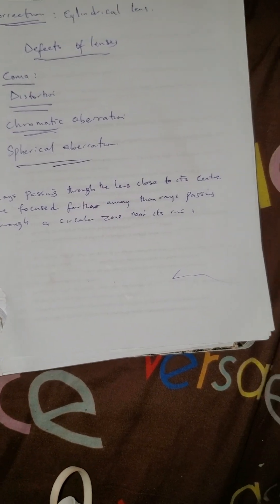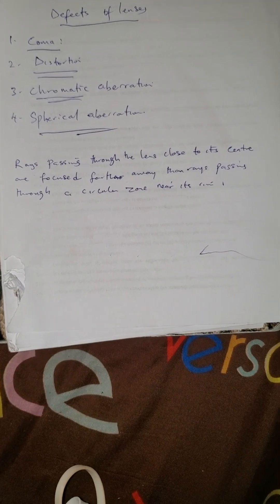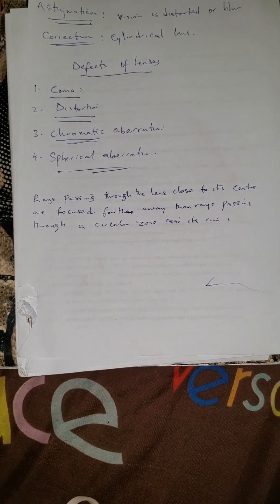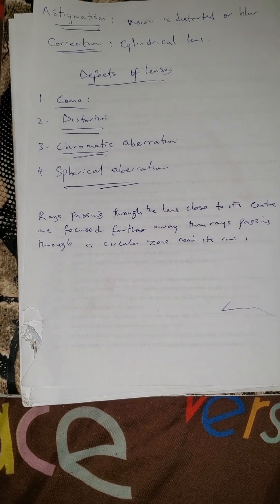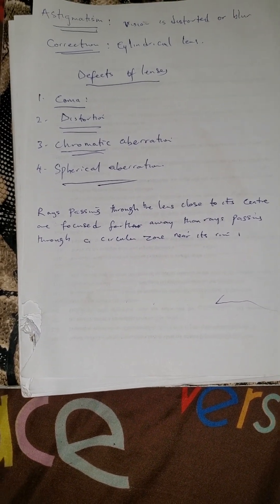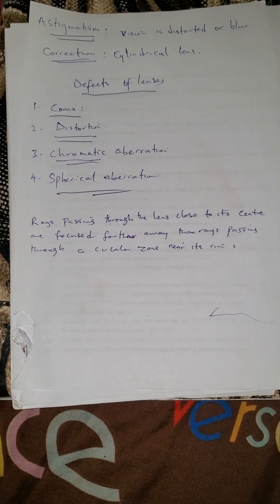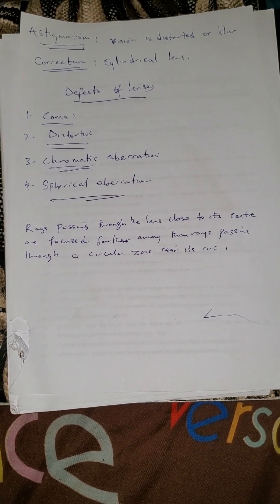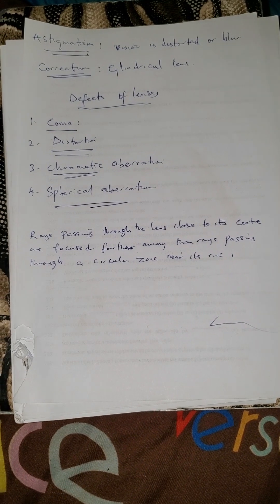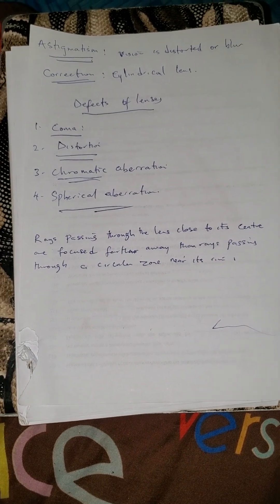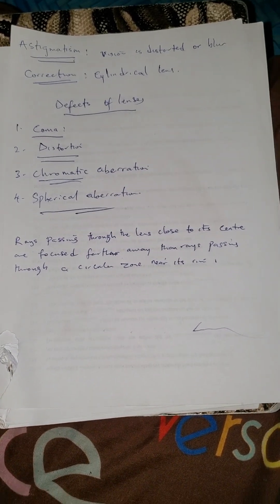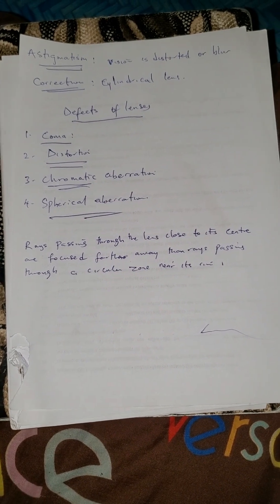So we have covered coma, distortion, chromatic aberration, and spherical aberration as the defects of lenses. With this, let us end this class here. These are the defects of vision and the defects of lenses. Thank you very much.